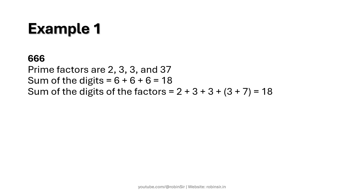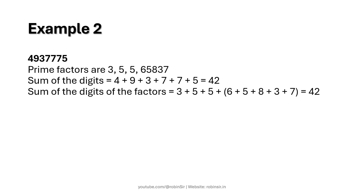Let's take another example. Here you can see another number where the prime factors are listed. The sum of the digits is 42, and the sum of the digits of the prime factors is also 42, which is why this given number is also a Smith number.